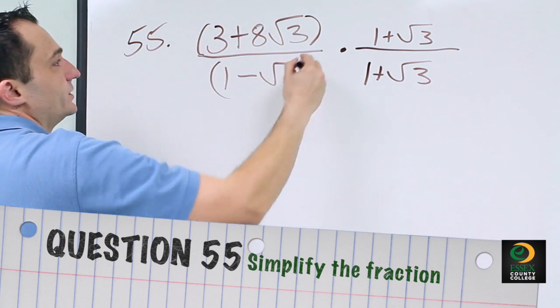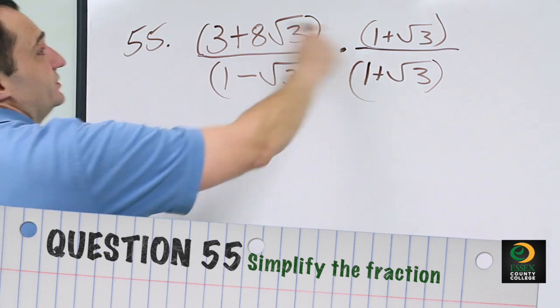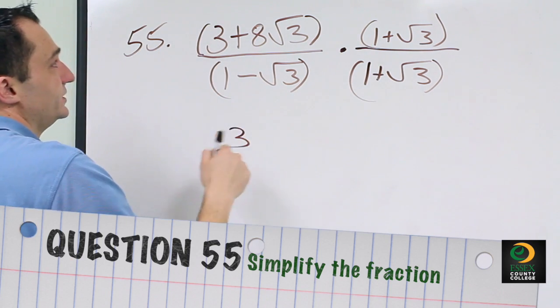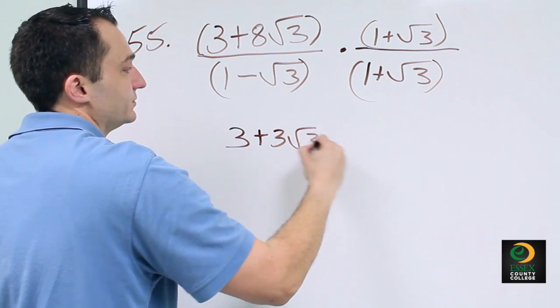Now we have to FOIL each of these terms: first, outer, inner, last. So 3 times 1 gives us 3. Our outer, 3 times radical 3, becomes plus 3 radical 3.